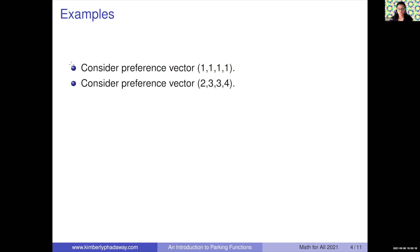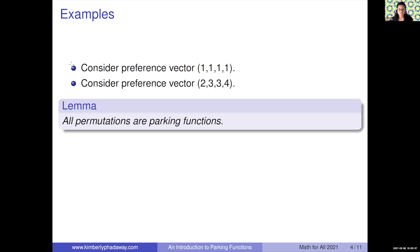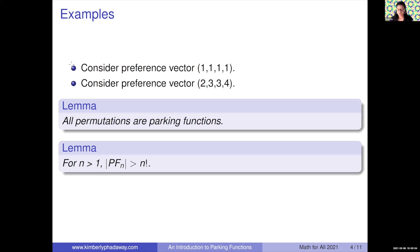Consider the vector (2, 3, 3, 4): car 1 wants spot 2 and parks there; car 2 wants spot 3 and parks there; car 3 wants spot 3, sees it filled, and takes spot 4; car 4 wants spot 4, sees it filled, and can't park. Therefore, this is not a parking function. All permutations are parking functions because each car wants a distinct parking spot, so every car parks exactly in its preference. We know that for n greater than 1, the number of parking functions of length n is greater than n factorial, since we can have parking functions that are not permutations, such as (1, 1, 1, 1).